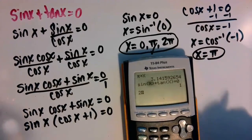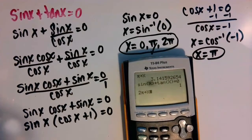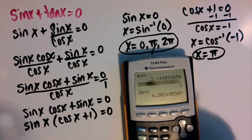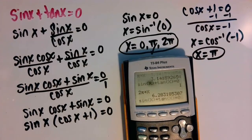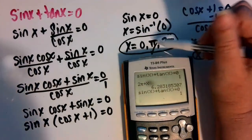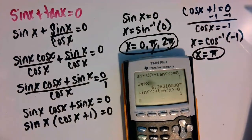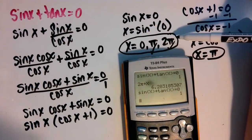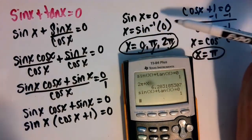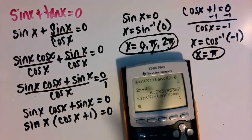And then we'll check two pi by storing that as x. We'll arrow up to that equation so we don't have to retype it. We get a one, and so two pi also checks. Zero is coterminal with two pi, so zero would have to be a solution as well.